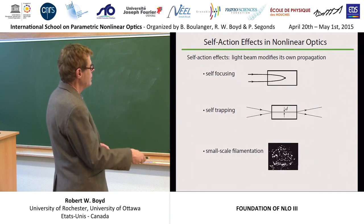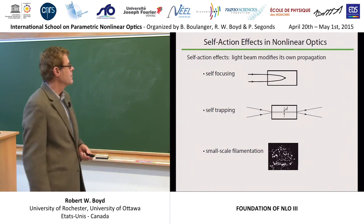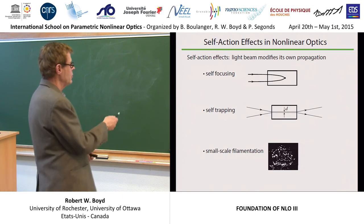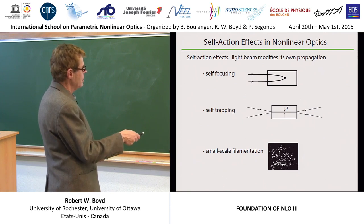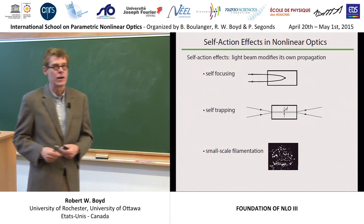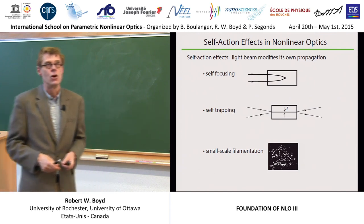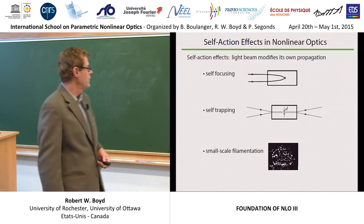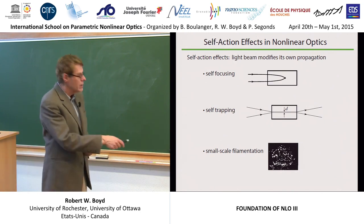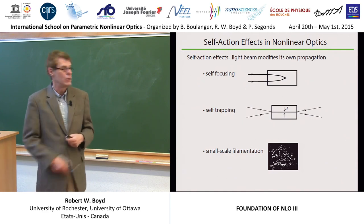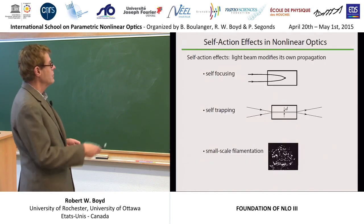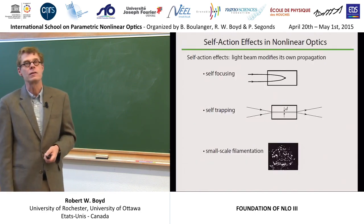Broadly speaking, we can talk about three types of self-action effects. One is self-focusing, where a beam of light originally collimated spontaneously comes to a focus inside of a material. We can talk about self-trapping, in which a beam of light propagates without diffraction over a distance much longer than its nominal Rayleigh range. And the third process is small-scale filamentation, where a laser beam breaks up into a very large number of small components, looking a bit like a speckle pattern. Let's look at the processes one at a time and see how we describe them theoretically.